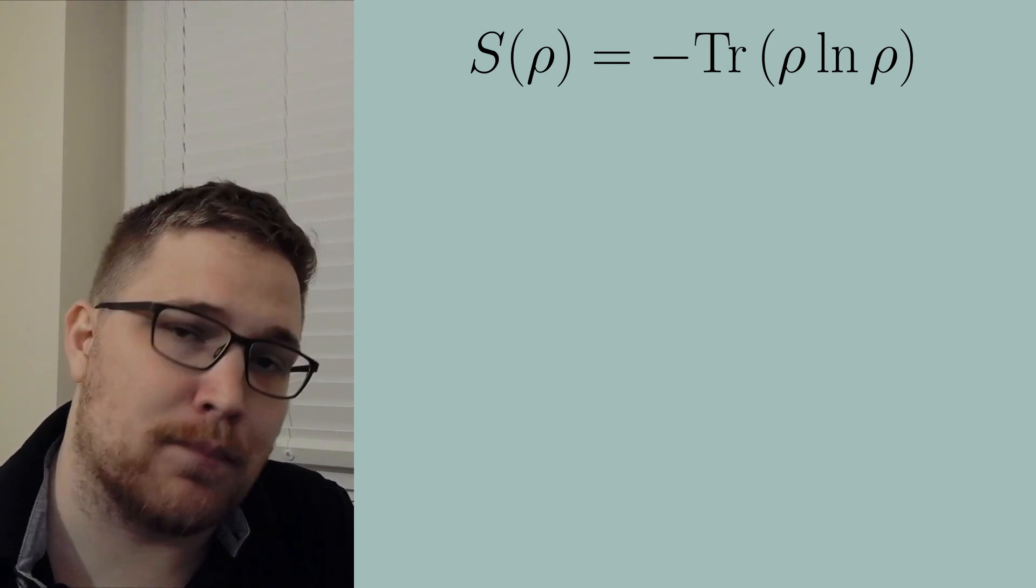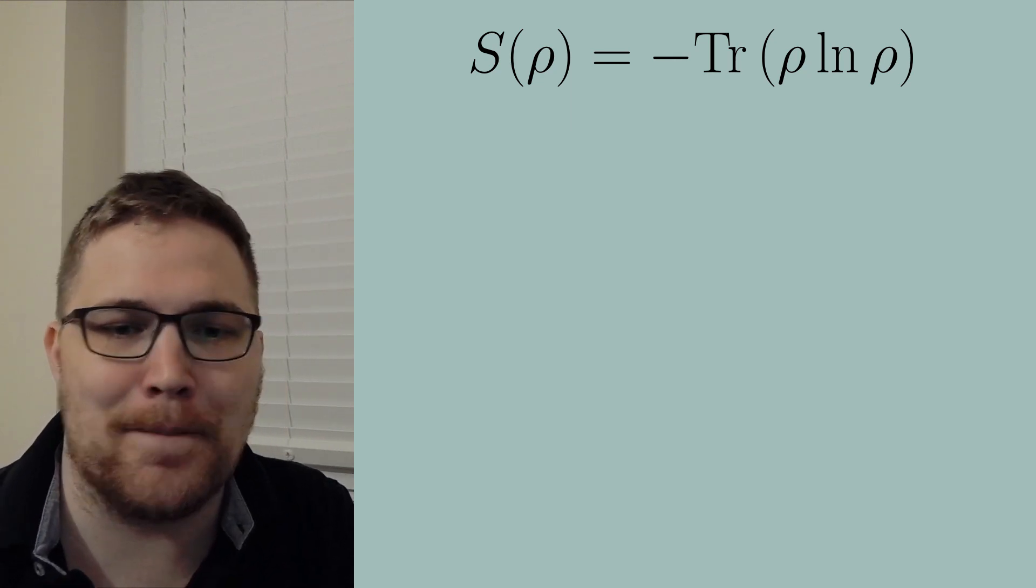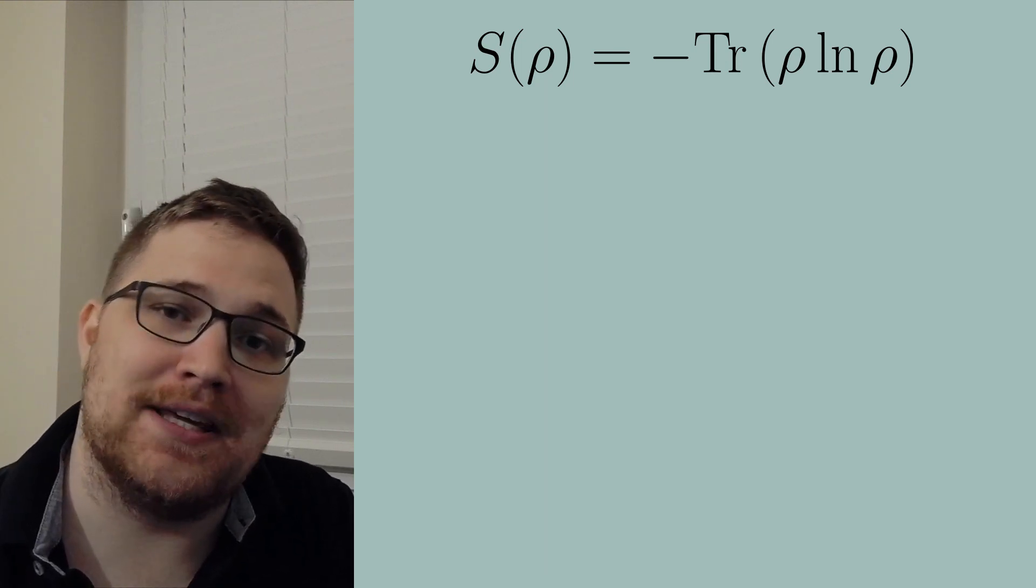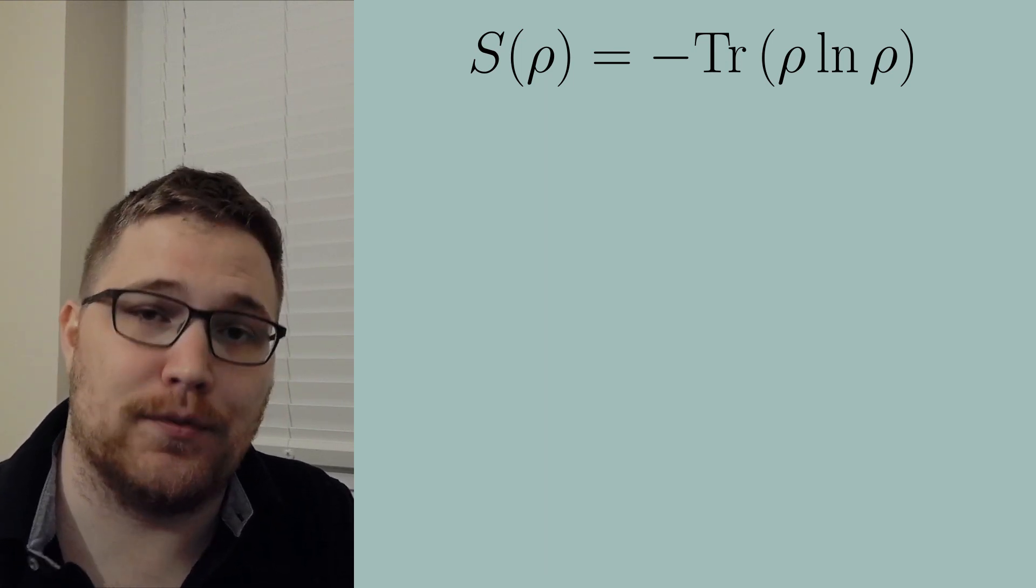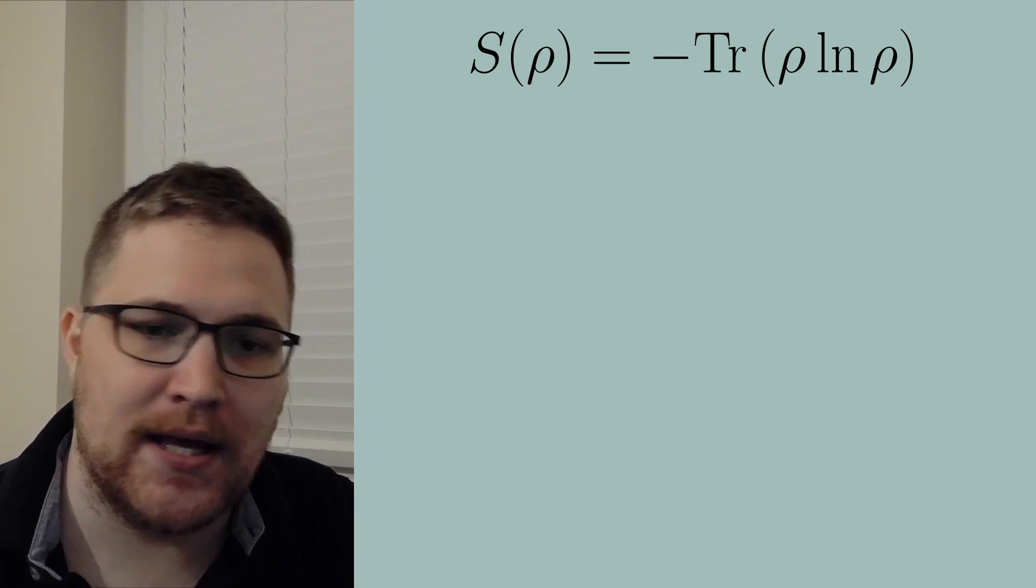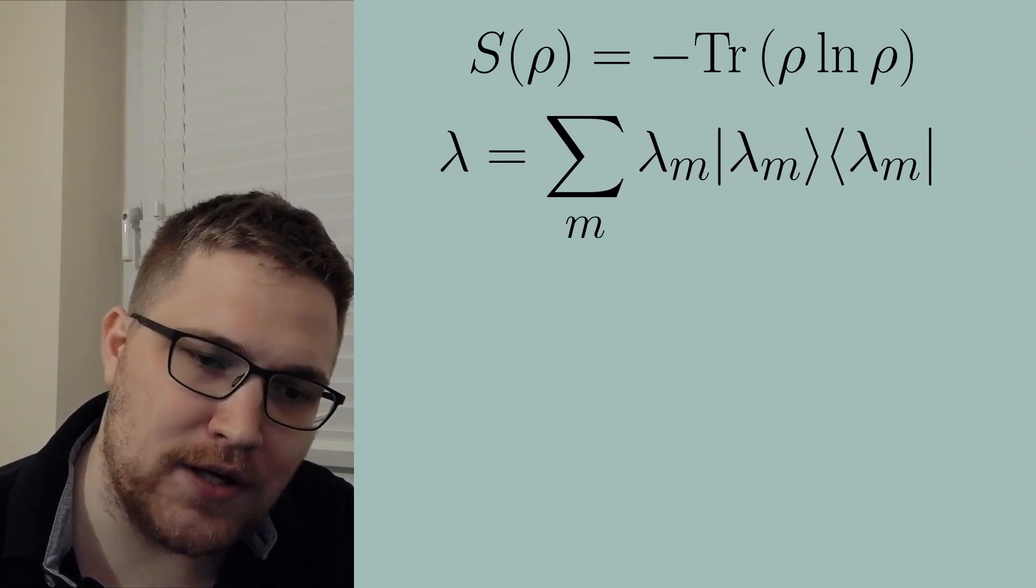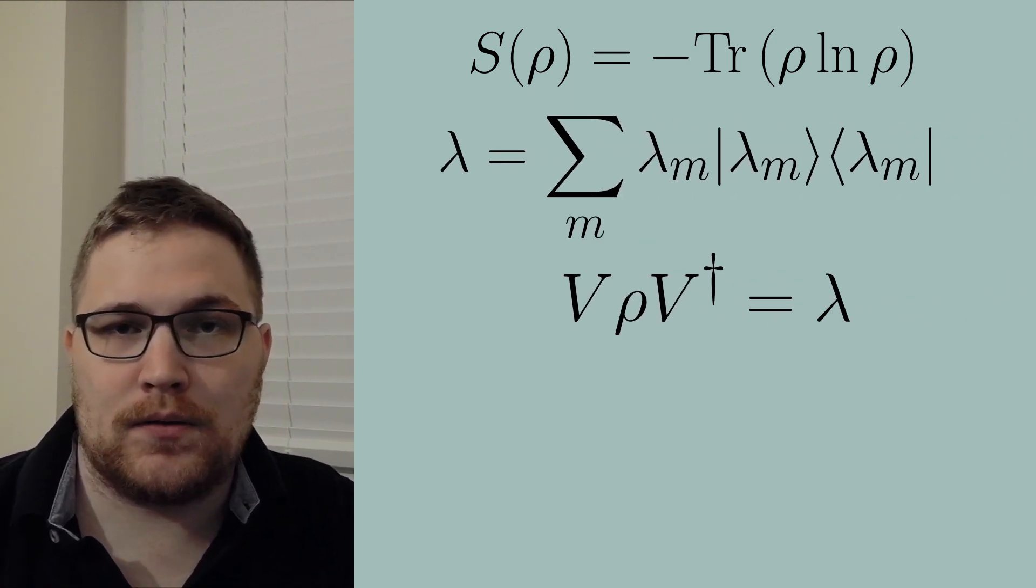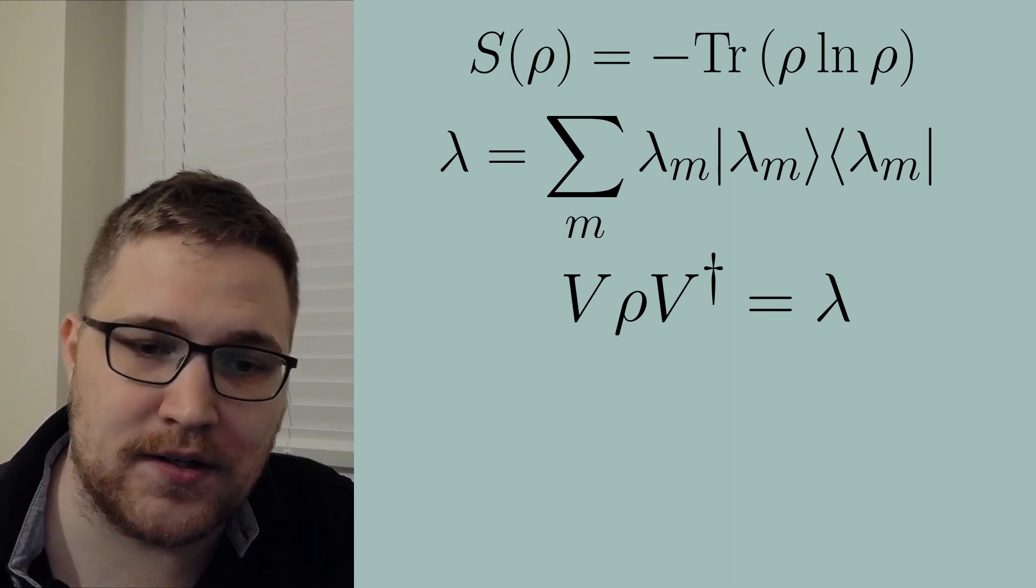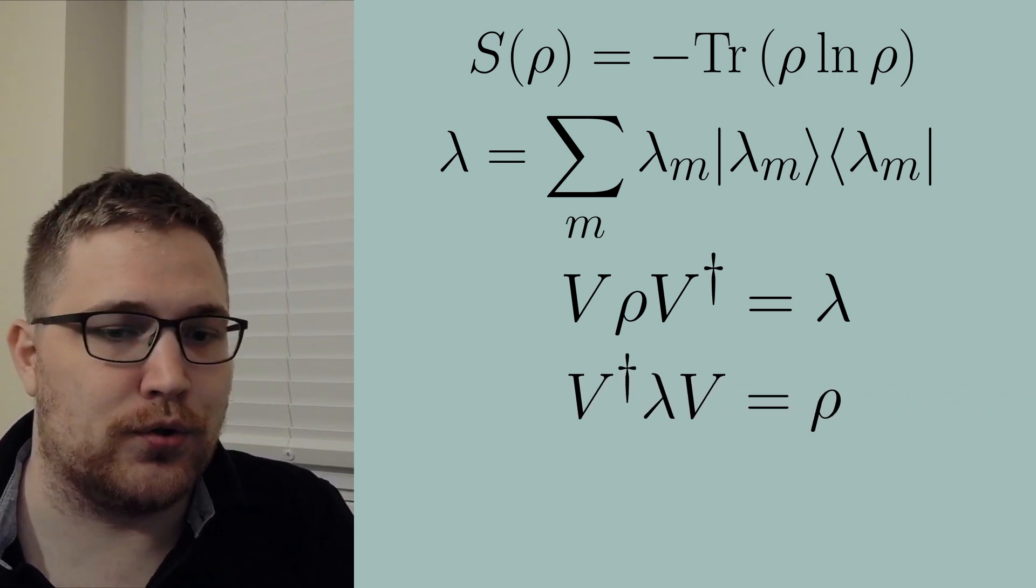The first and most important property I will bring up is that entropy is invariant in the basis we choose to write the density matrix in. This should of course be a very intuitive physical demand that we have of entropy. To see this we might rewrite our density matrix in the basis in which it is diagonal where we are going to again write V times ρ times V dagger is equal to λ which again allows us to rewrite this expression as V dagger times λ times V is equal to ρ.